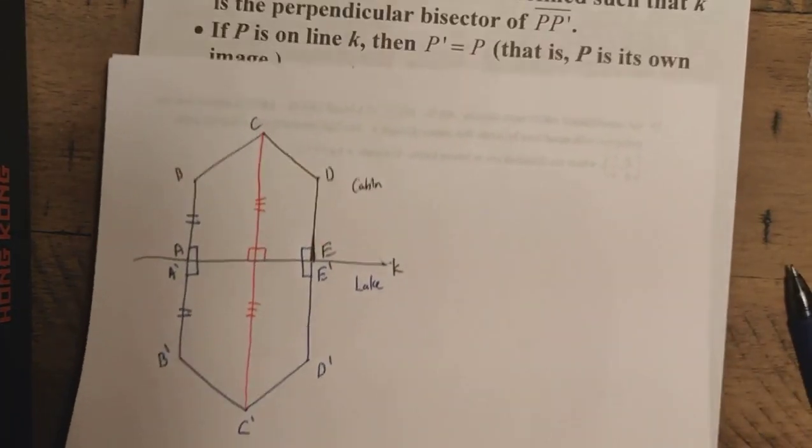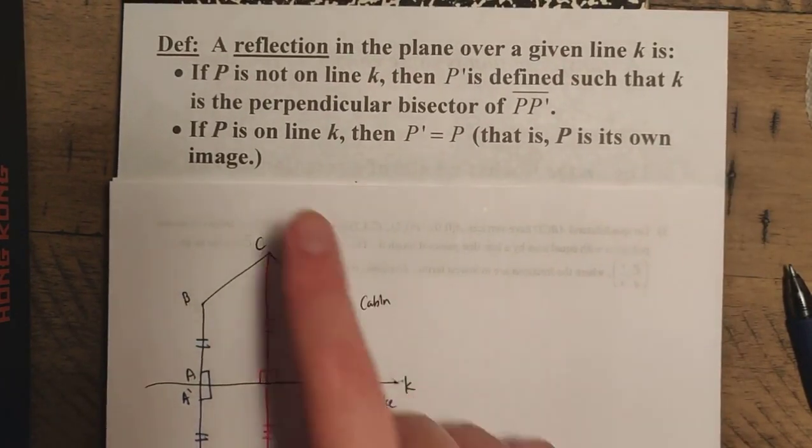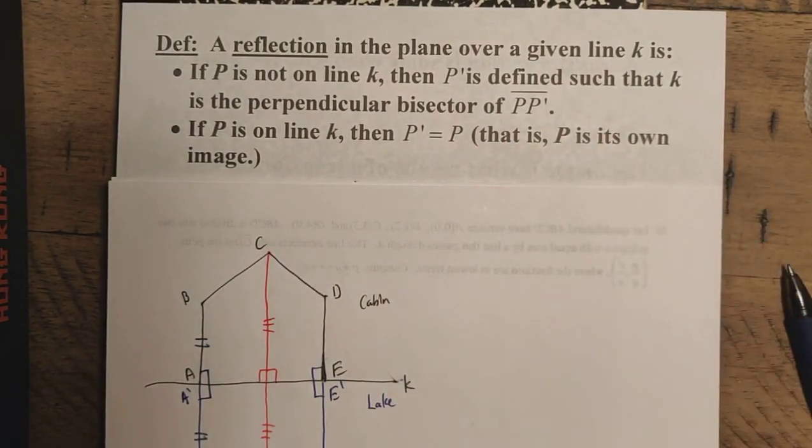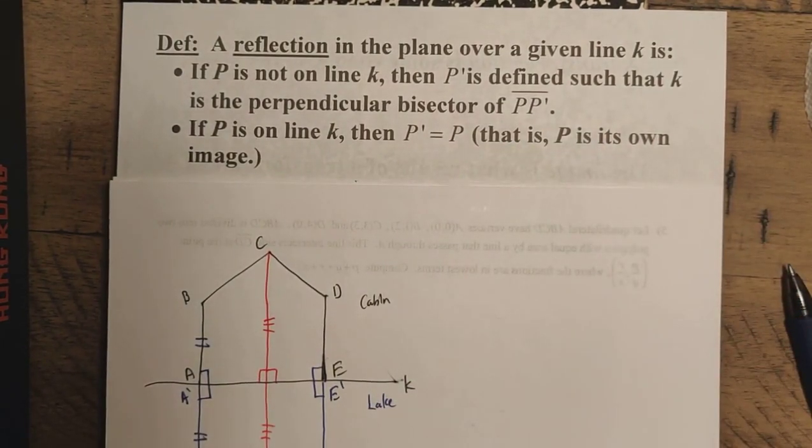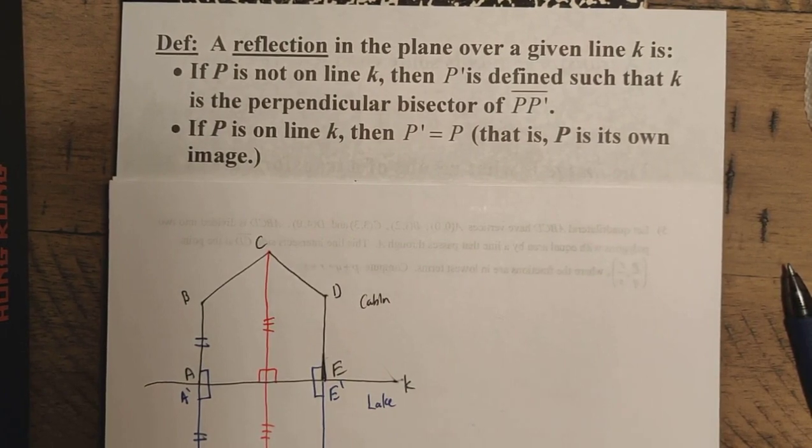So that actually gives us this here. So that second case we were talking about here, if P is on line K, then P prime is equal to P. That is, P is its own image here, right? So in this case here, we can reflect. If you're reflecting over a line and your point is on the line to start, then you're going to be its own image.